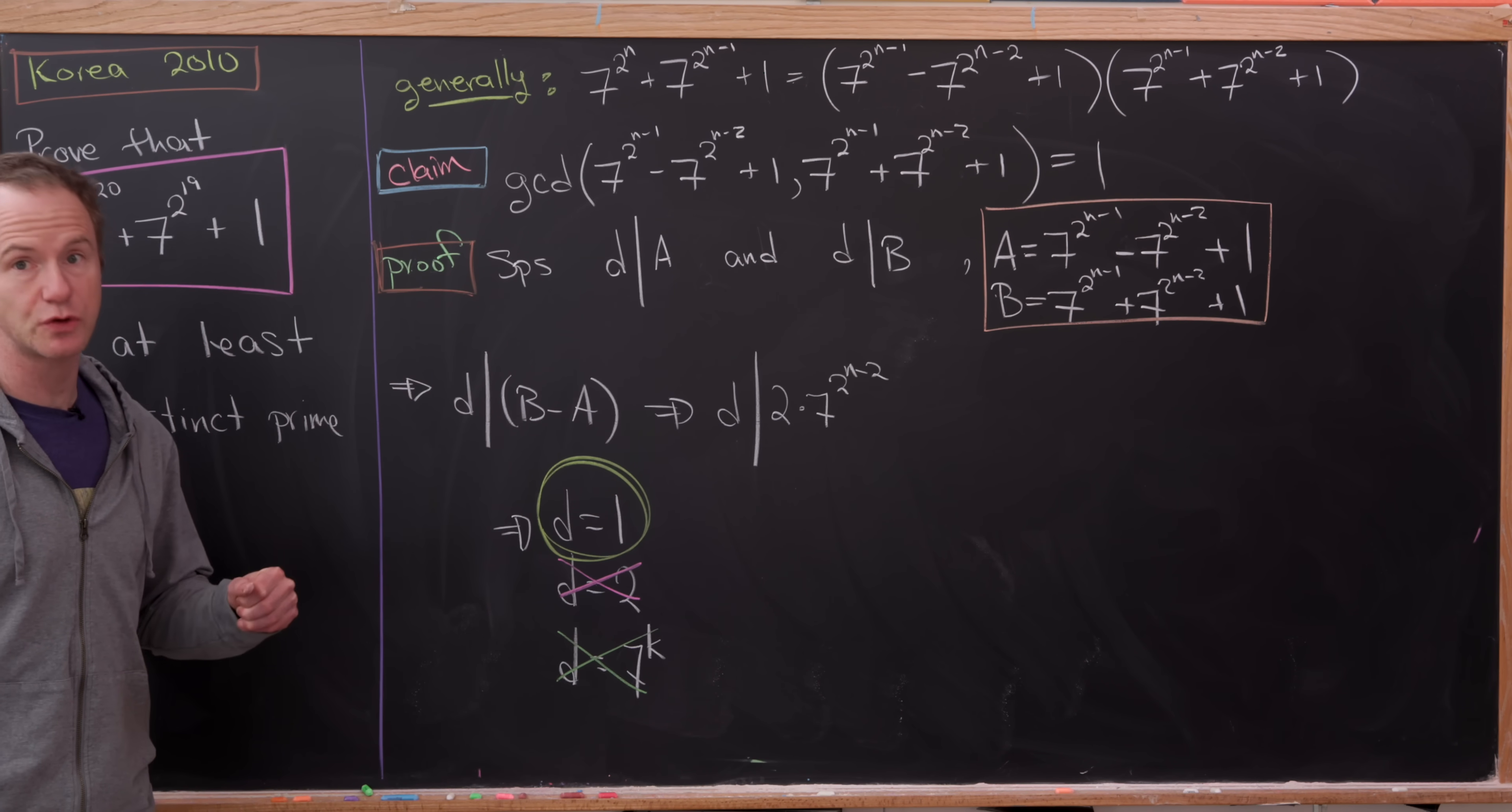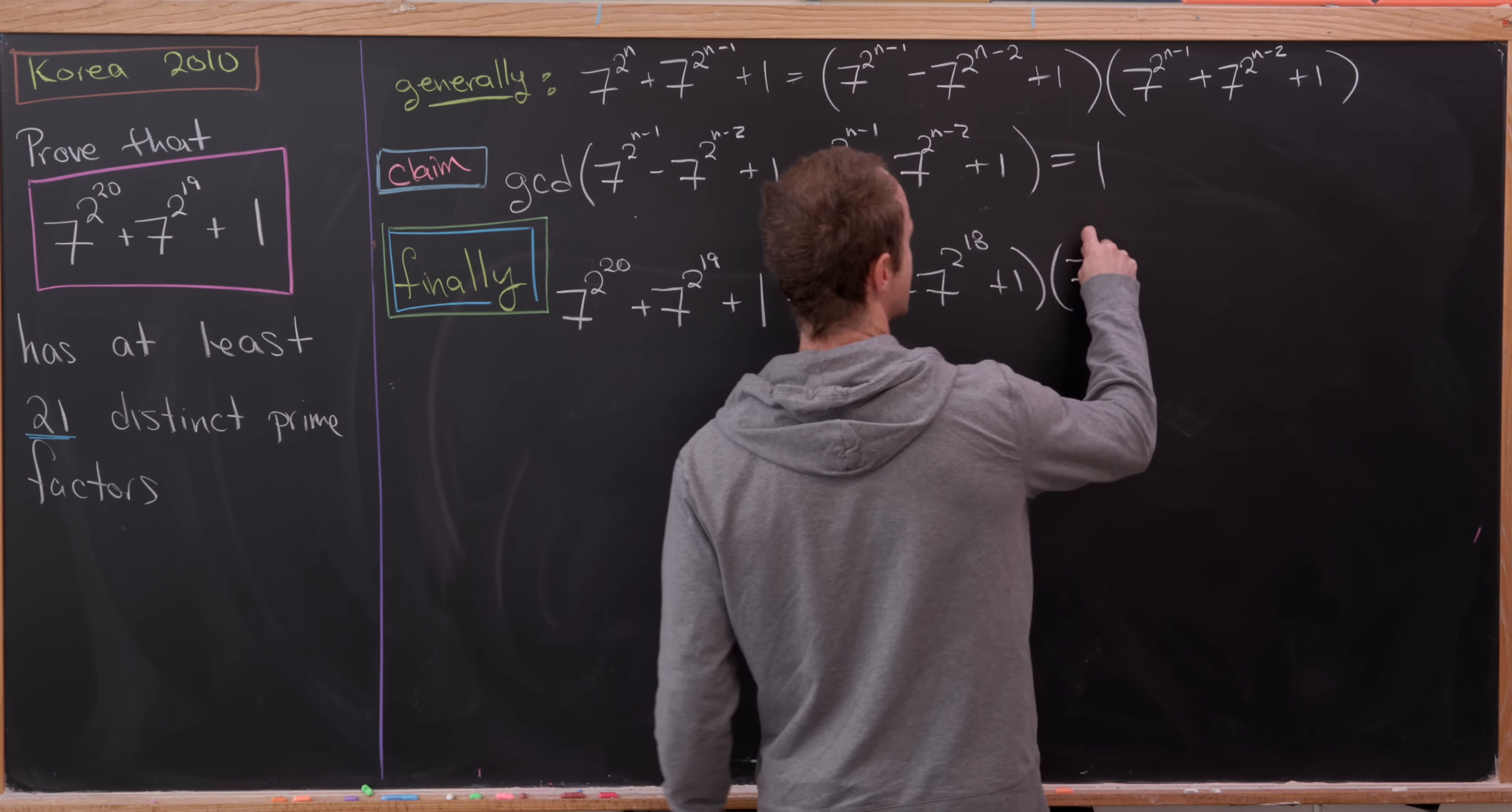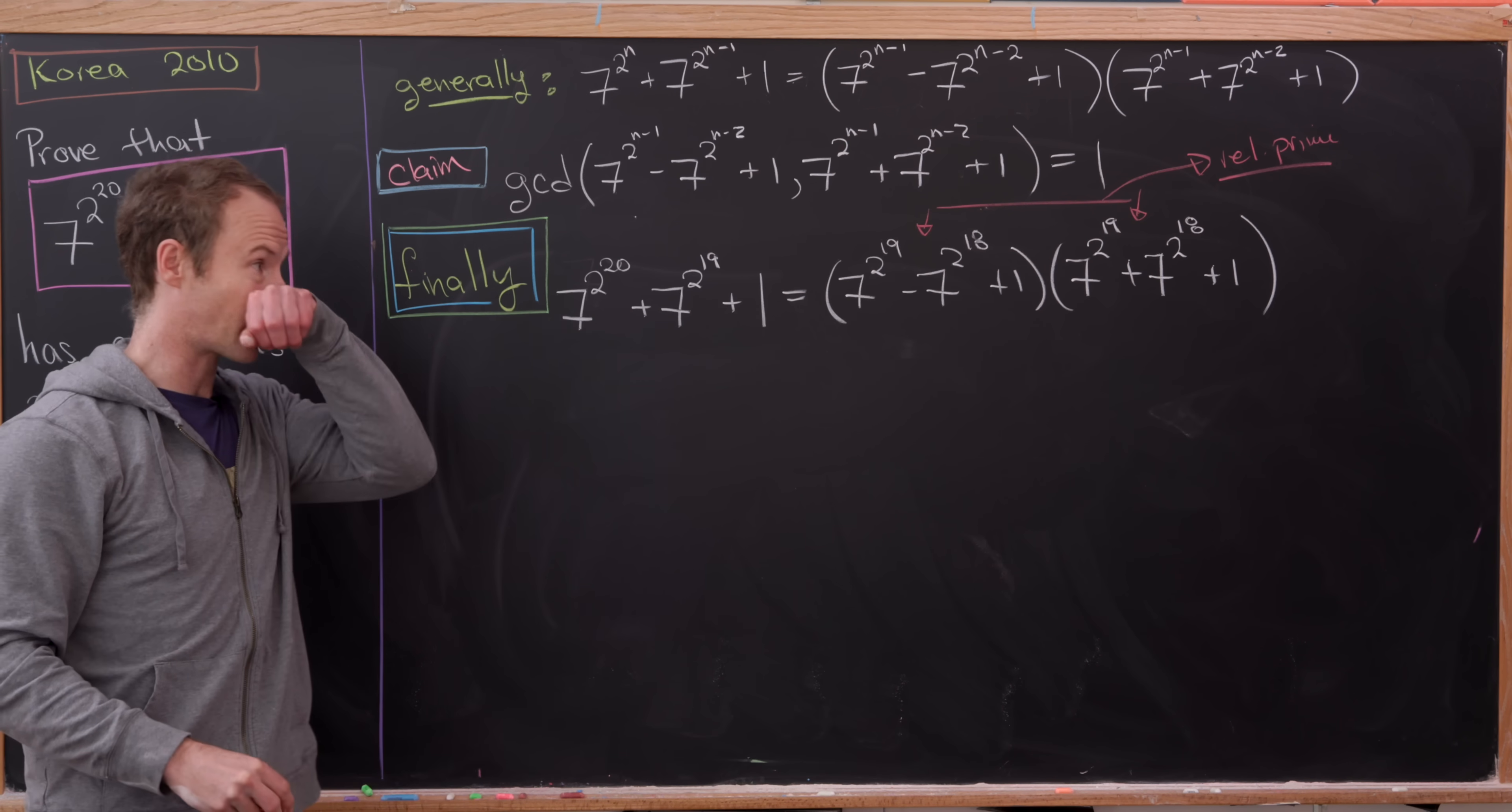So now that we've got those two tools. And by those two tools I mean our factorization tool and our GCD result. We're ready to finish it off. Now we're ready to finish it off. Let's start with our number in question. And now let's start with the factorization tool. So that gives us 7 to the 2 to the 19 minus 7 to the 2 to the 18 plus 1 times 7 to the 2 to the 19 plus 7 to the 2 to the 18 plus 1. But now by our result that we just proved involving the GCD, these two numbers right here are relatively prime. So that means they do not share prime factors.